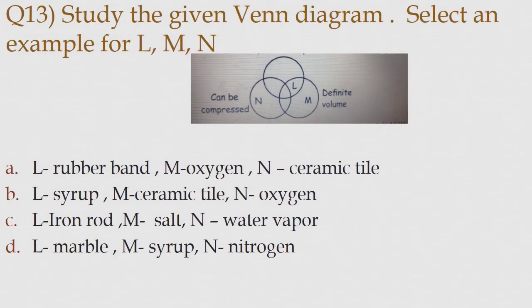Question number 13. Study the given Venn diagram. Select an example for L, M, N. Option A: L: Rubber band, M: Oxygen, N: Ceramic tile.